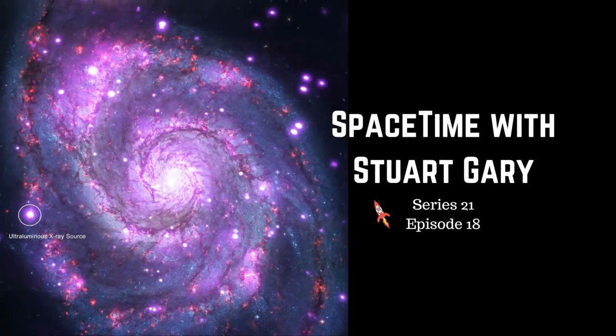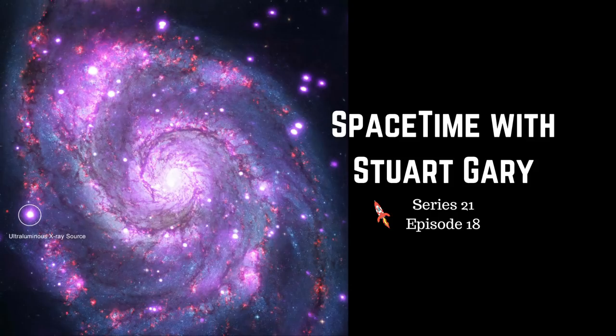This is Space Time, Series 21, Episode 18, coming up on Space Time. Neutron stars confirmed as the source of ultraluminous X-rays, an interesting twist in the evolution of the Milky Way galaxy, and little prospect of life on Proxima B. All that and more coming up on Space Time.